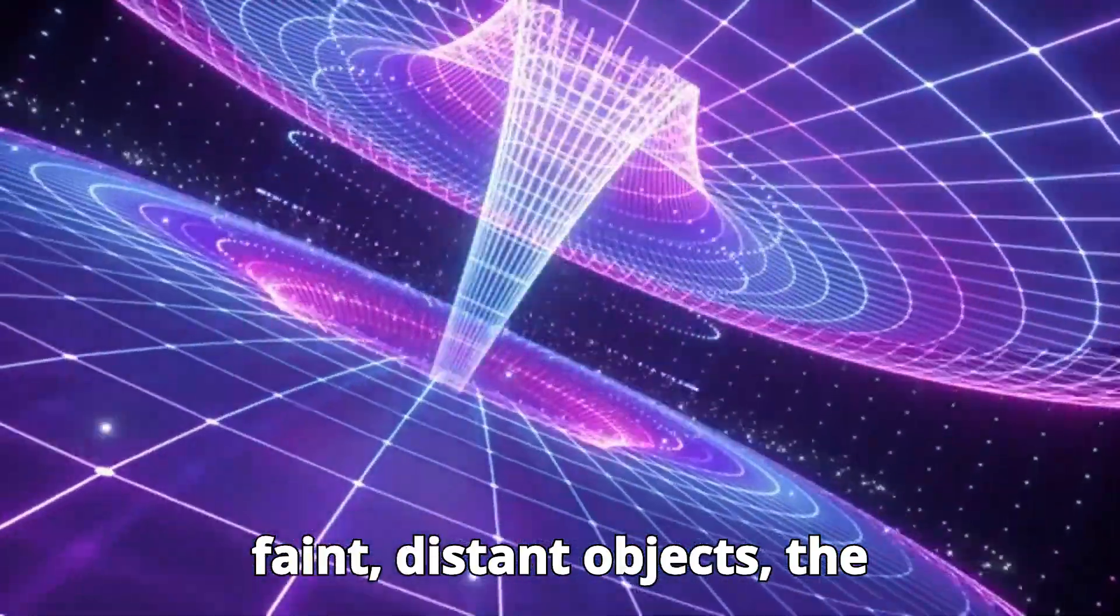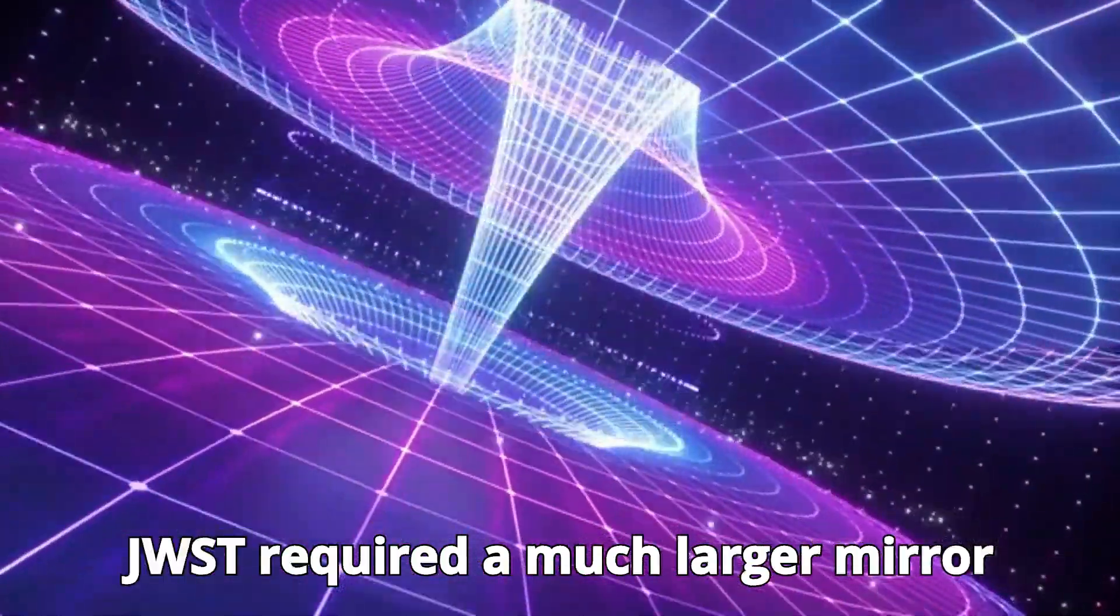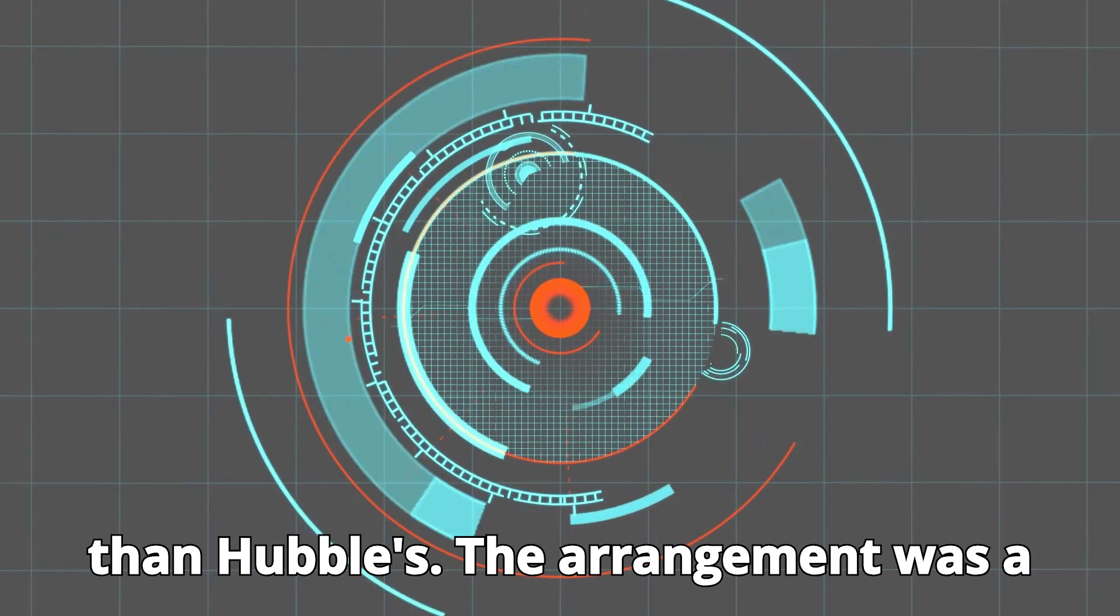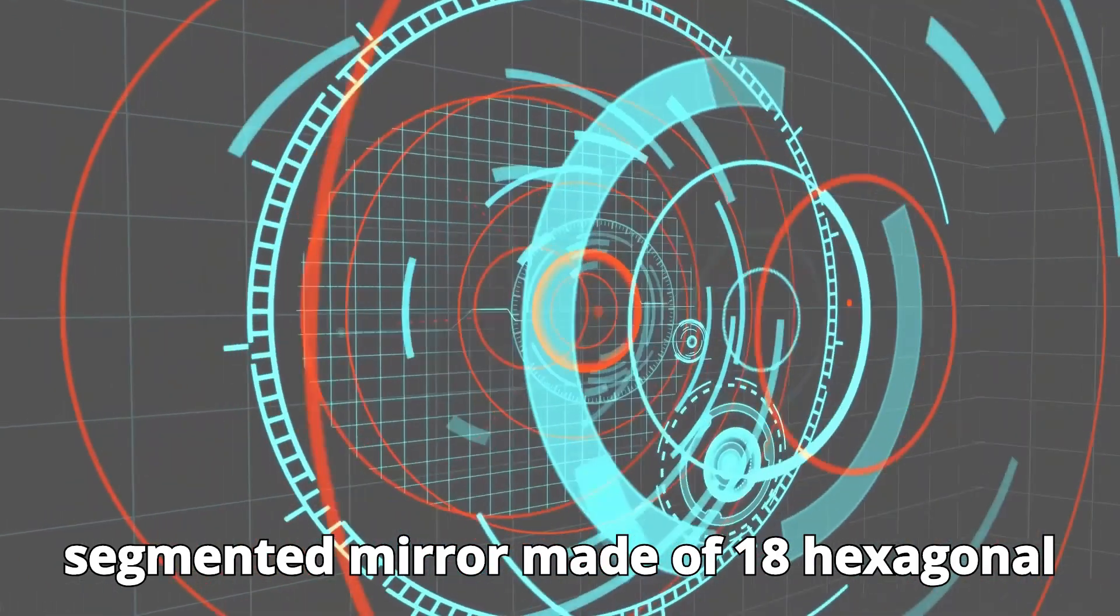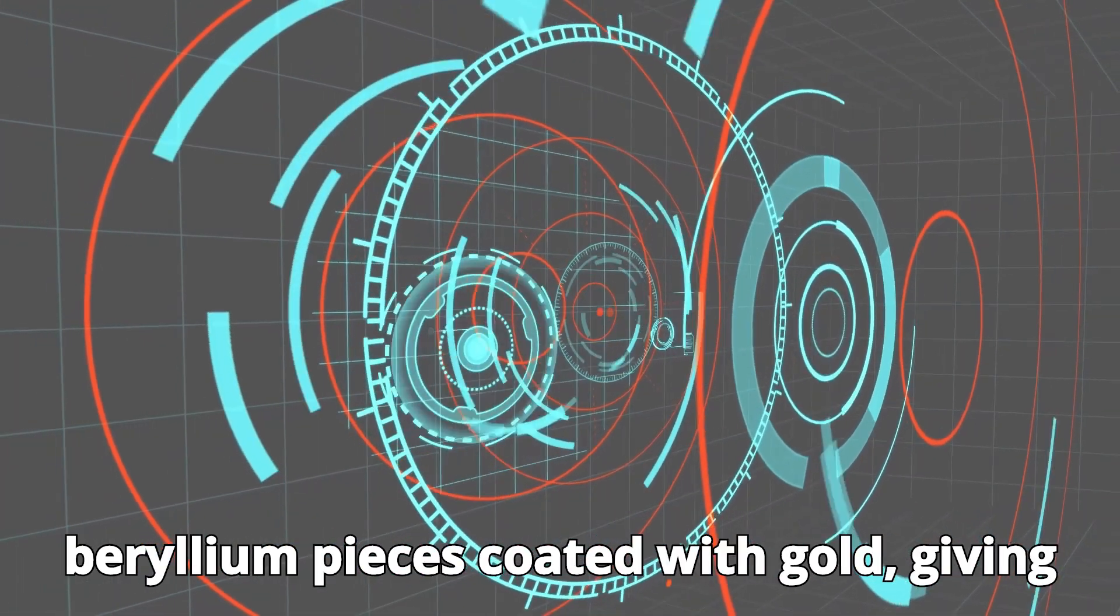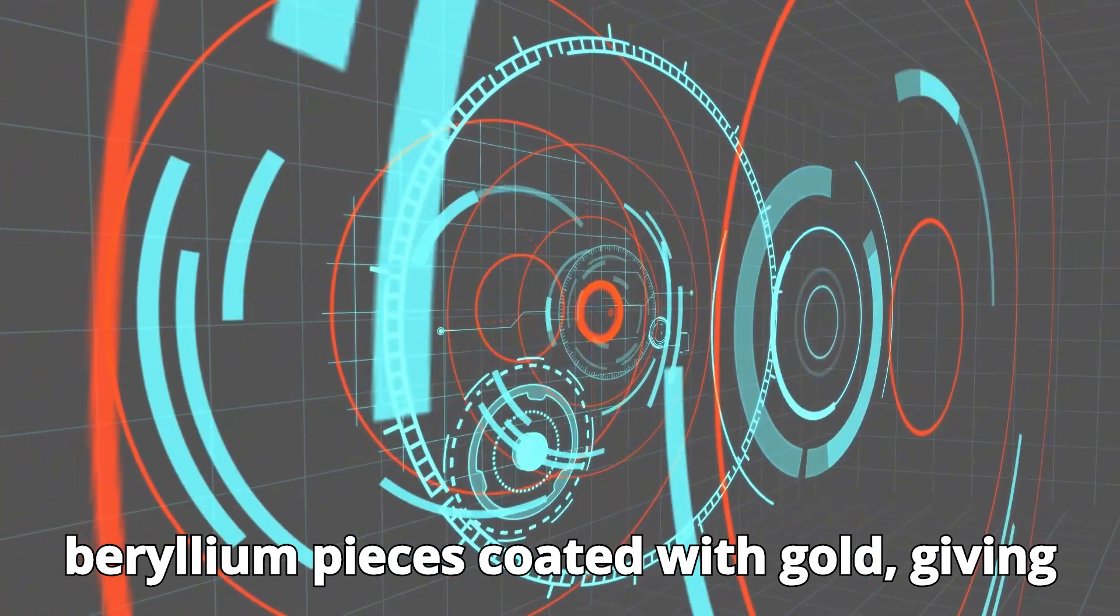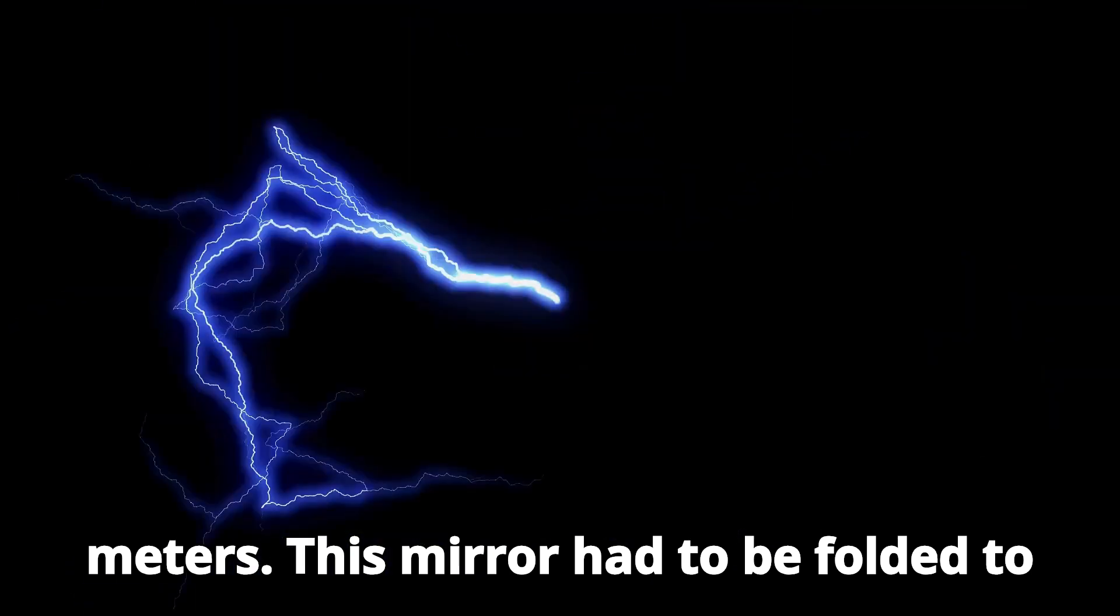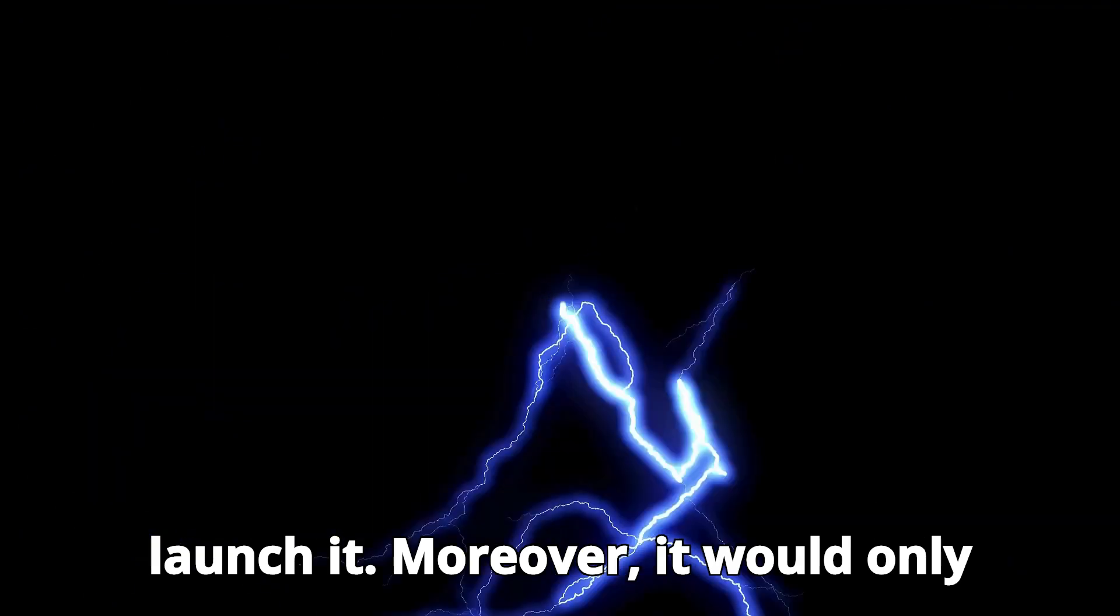To observe faint, distant objects, the JWST required a much larger mirror than Hubble's. The solution was a segmented mirror made of 18 hexagonal beryllium pieces coated with gold, giving the telescope a total width of 6.5 meters. This mirror had to be folded to fit inside the Ariane 5 rocket that would launch it.